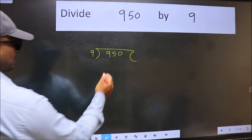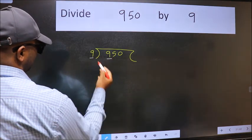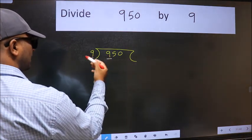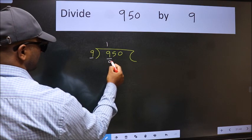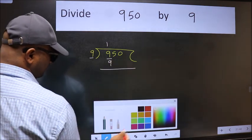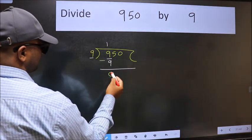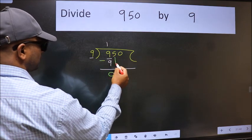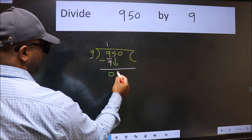Next. Here we have 9 and here 9. When do we get 9 in 9 table? 9 once 9. Now we should subtract. We get 0. After this, bring down the beside number. So 5 down.